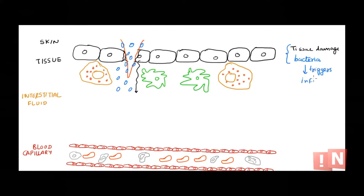We are talking about skin cells. The tissue would have mast cells and dendritic cells present in this region. Mast cells and dendritic cells have receptors that can sense the tissue damage, because the damaged cells release proteins and cell material. If the receptors on dendritic cells and mast cells bind with some of those cell proteins or molecules, that is going to trigger the mast cell and dendritic cell.